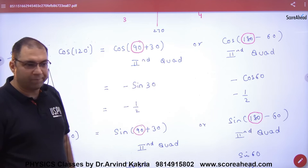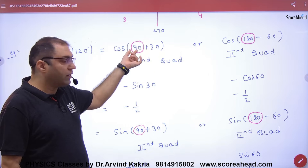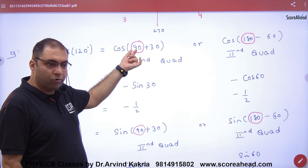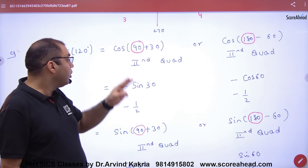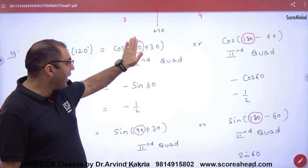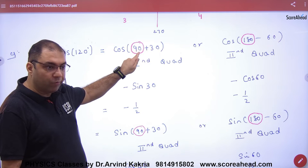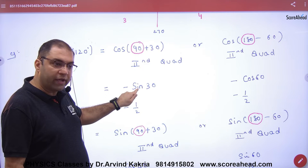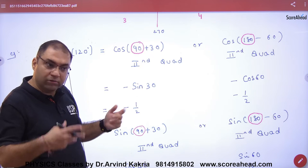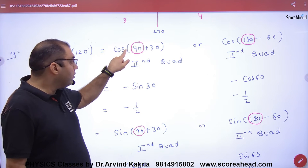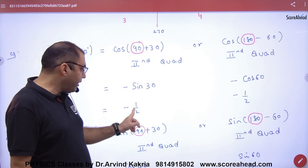This is the important conversion rule: if the first standard angle is 90 or 270, then the trigonometric function converts — cos becomes sin, sin becomes cos, and tan becomes cot. So cos(90 + 30): the 90 is removed, cos converts to sin, giving sin 30, which equals half. So the answer is minus half.